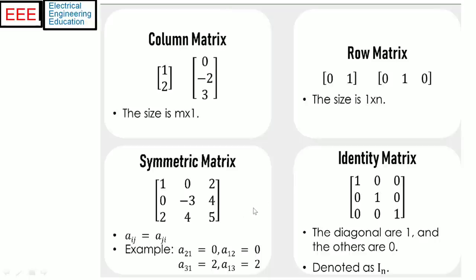For example, the two matrices on the top left corner are column vectors of dimension two by one and three by one. The two matrices on the top right corner are row vectors of dimension one by two and one by three. The matrix in the bottom left is a three by three matrix and is symmetrical — if we interchange the rows and columns, we get the same matrix. The matrix in the bottom right is a three by three identity matrix having diagonal elements as one while the rest of the values are zero.